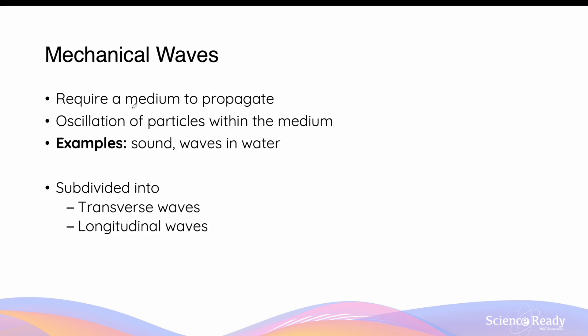Mechanical waves are ones that require a medium to propagate in. This means when energy is transferred from one location to another through a mechanical wave, the disturbance caused by this mechanical wave requires a medium such as a solid, liquid, or gas. This disturbance is represented by oscillation of particles within that medium.